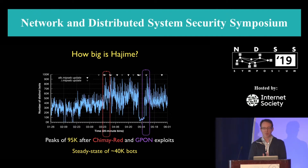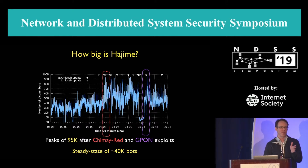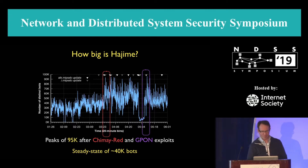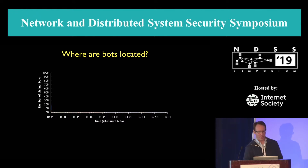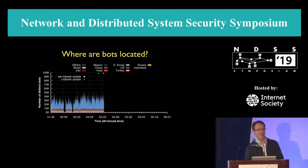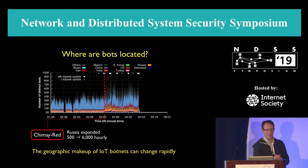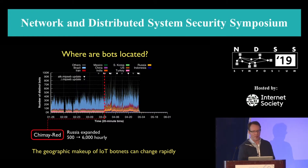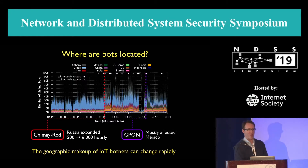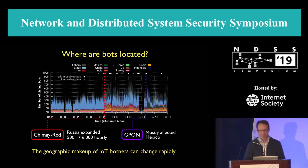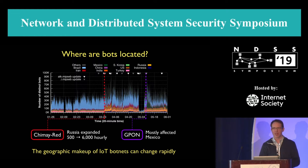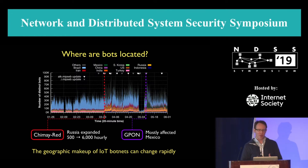Also noteworthy is that each of these exploits targets very specific routers — Chimay Red targets versions of MikroTik routers, and G-Pon targets G-Pon routers. Next, where are bots located? Over the same timeframe, looking at the ten most infected countries, we see a preponderance of bots in Brazil. But again, exploits have a big effect. With Chimay Red, Russia went from very lightly infected to having 6,000 active bots per hour almost immediately. In the case of the G-Pon exploit, the preponderance of that exploit affects Mexico. This really hammers home the point that the deployment of IoT devices is not symmetric across the globe — it's very heterogeneous.